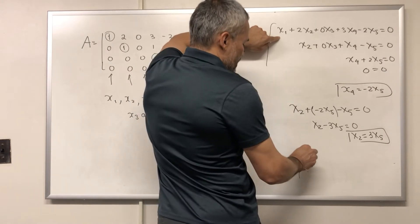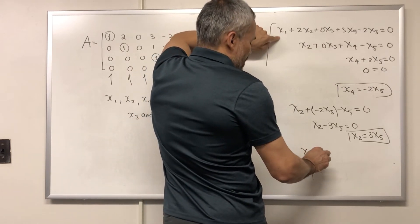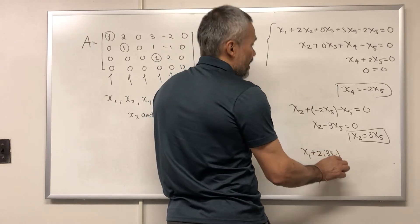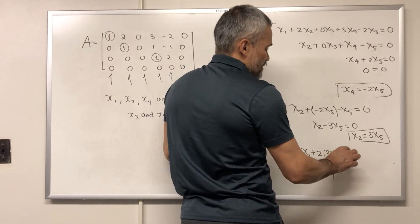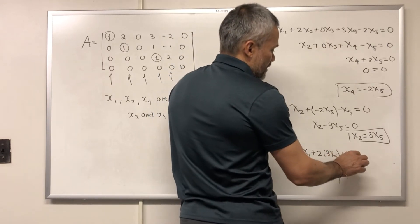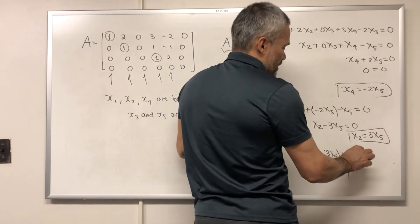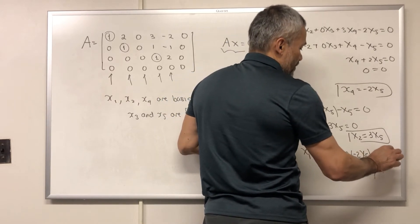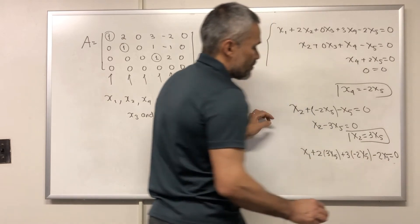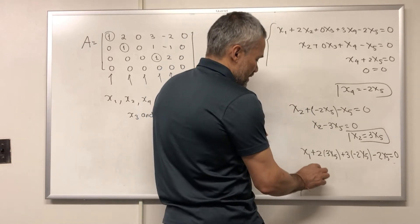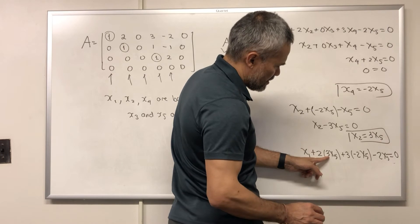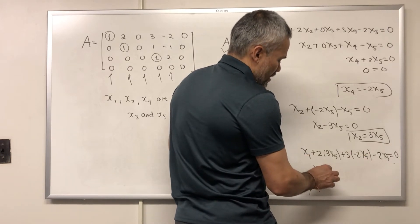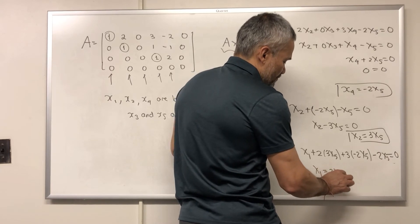And finally, from this equation, we get that X1 plus 2X2 plus 3 times X4. X4 is negative 2X5 minus 2X5. And this is equal to 0. And that means that X1, this is 6 minus 6 is 0. And it will be equal, X1 will be 2X5.